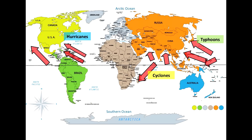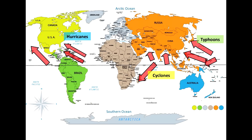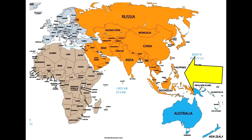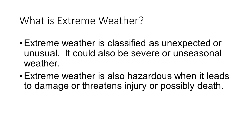For atmospheric hazards, we look at tropical storms — specifically hurricanes, cyclones, and typhoons. They are just named differently depending on where they occur; they're all the same type of tropical storm. We looked at Typhoon Haiyan as a case study example. Again, you need to know that case study really well — the primary and secondary effects, and the immediate and long-term responses for that event.